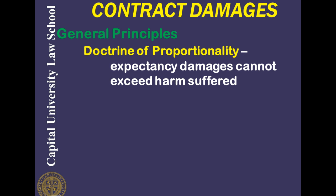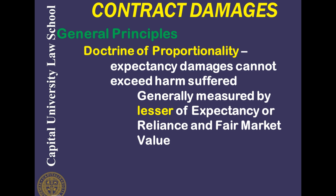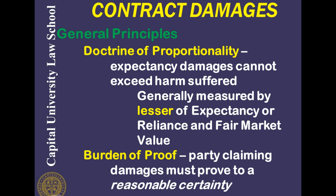Another general principle is the doctrine of proportionality: expectancy damages cannot exceed the harm suffered. This is generally measured by the lesser of the expectancy or reliance and the difference between what was delivered and its fair market value. Regarding burden of proof, the party claiming damages must prove to a reasonable certainty the amount they are claiming — the operative words being reasonable certainty, not absolute certainty.